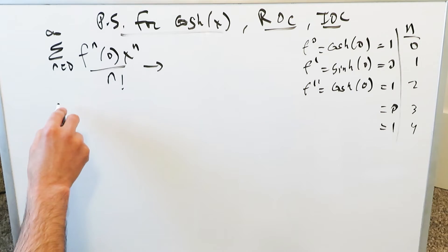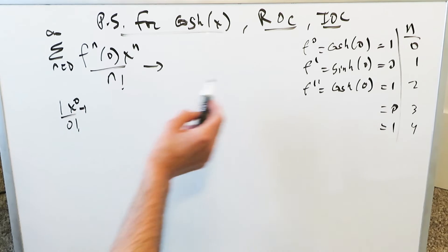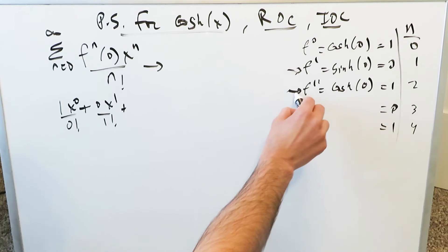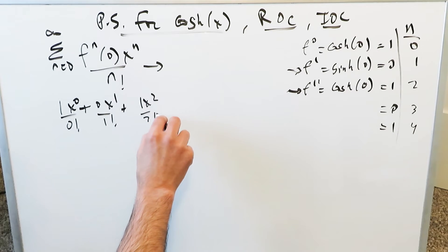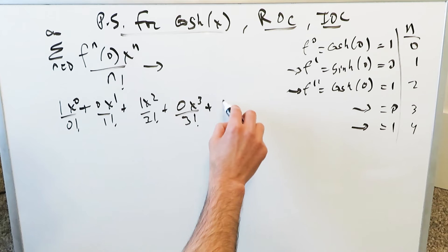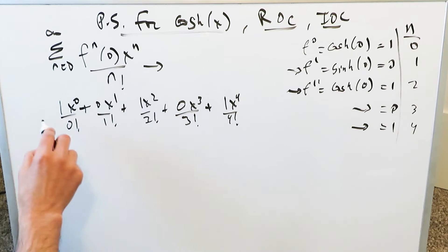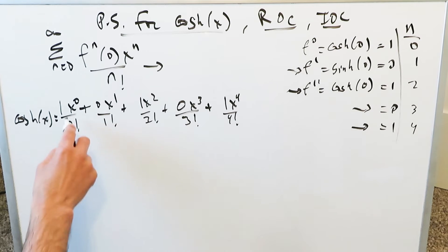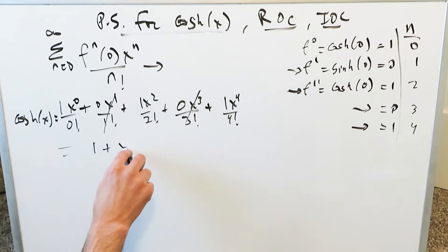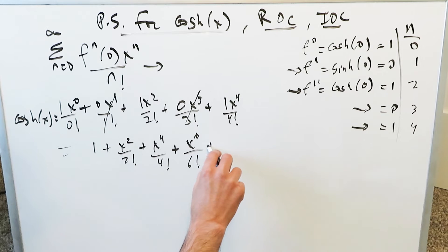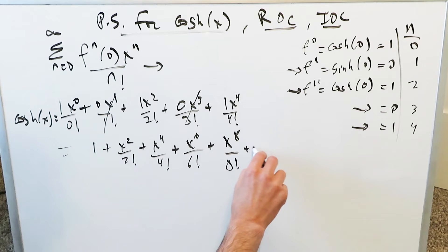Developing the series from n equals 0 up to 4: the zeroth order term gives 1 times x to the 0 over 0 factorial. Then you have 0 times x to the 1 over 1 factorial. Then 1 times x squared over 2 factorial. Then 0 times x cubed over 3 factorial. Then 1 times x to the 4 over 4 factorial. After zeroing out the zero terms, you have 1 plus x squared over 2 factorial plus x to the 4 over 4 factorial, and so on — the Maclaurin series for hyperbolic cosine.